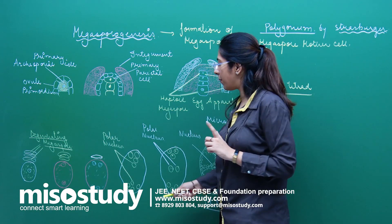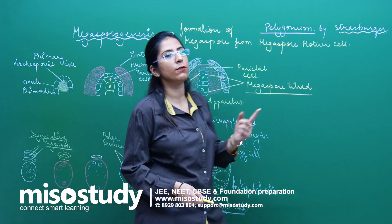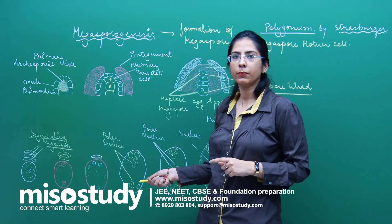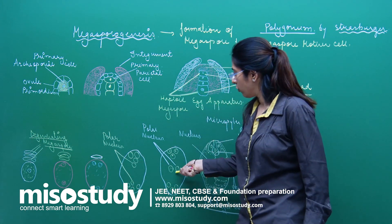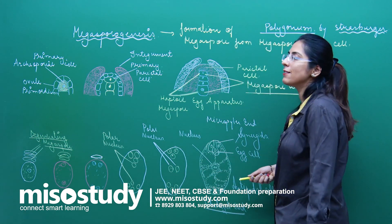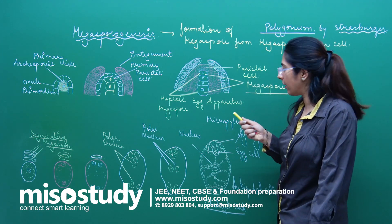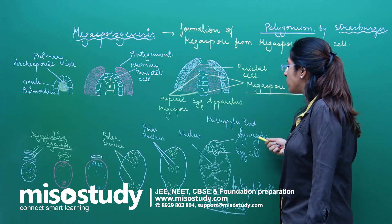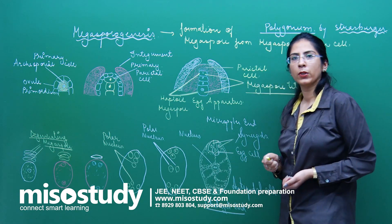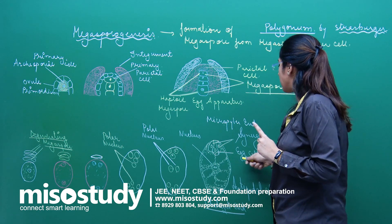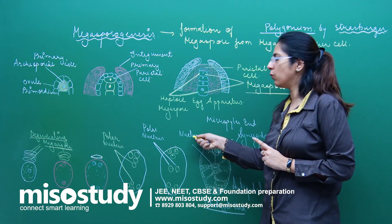We now have eight nuclei. One nucleus from the Chalazal end and one nucleus from the Micropylar end move to the center, and together they form the polar nuclei of the central cell. At the Micropylar end there is differentiation of special structures: two synergids are present — one synergid and a second synergid — along with one egg cell.